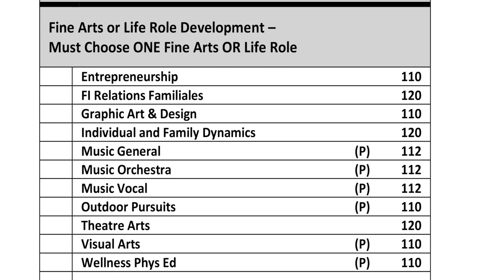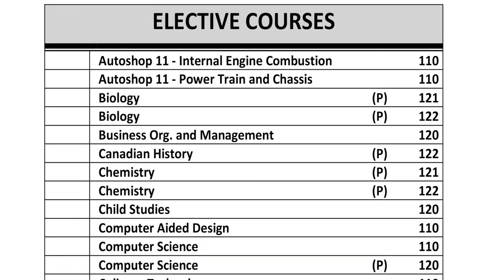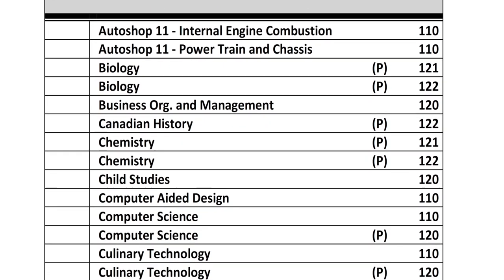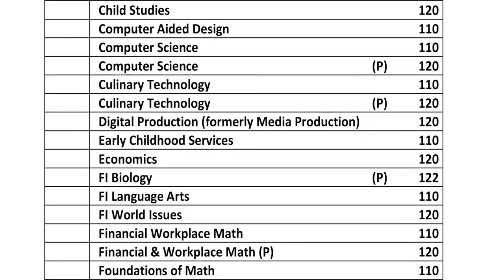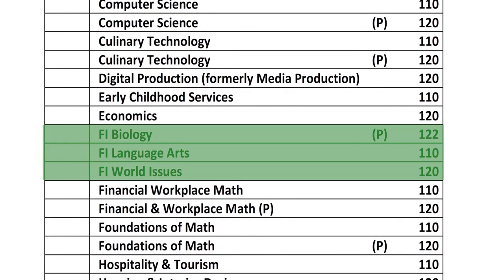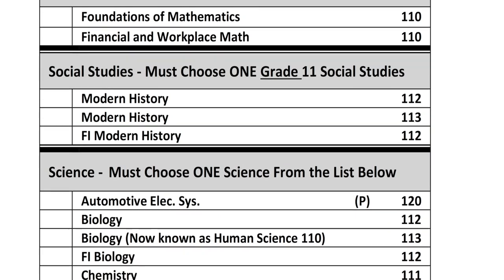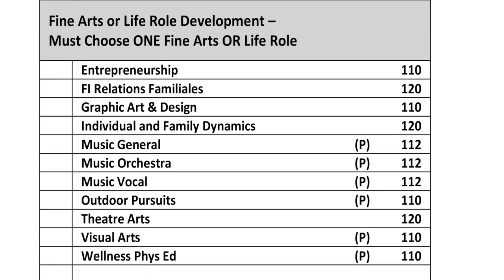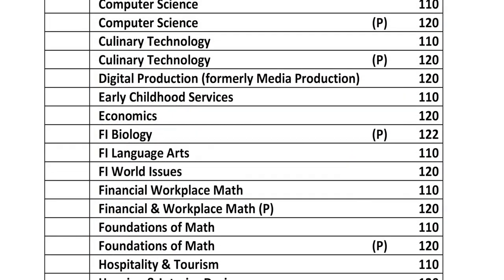Now that you have selected all of the mandatory requirements for graduation, it is time to move on to the electives. This is where you have some more choice. You are to choose as many courses as you need so that you have an opportunity to get 10 total credits next year. Keep in mind that if you are a French immersion student, you must take five of your elective courses in French over the course of grade 11 and grade 12. If you do not pick five immersion courses, this means that you are leaving the French immersion program. In this case, you must meet with your guidance counselor to discuss the transfer process before selecting your courses.